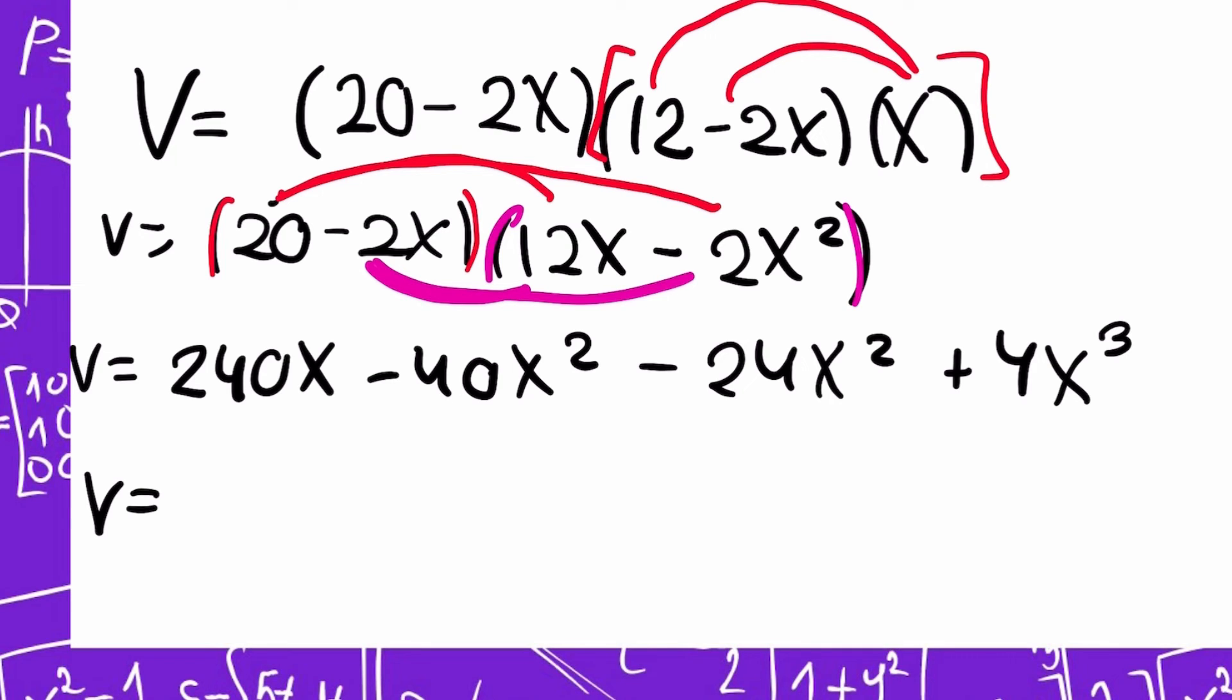And now I need to see what I can operate. So I can do this operation because they're both x squared. So I have 240x minus 40 minus 24, that is minus 64x squared, plus 4x cubed.